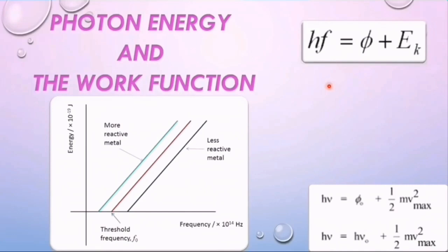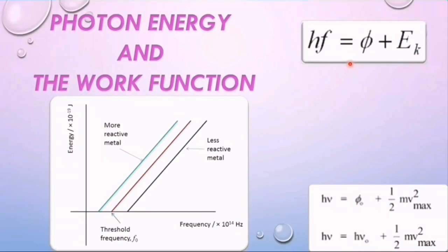The electron gains all of the energy of the incident photon and the photon no longer exists. The energy of the incident photons performs two jobs: first, it enables the electron to escape from the metal surface or energy well; and second, it increases the kinetic energy of the electrons. If energy of the incident photon is less than the threshold value, the surface electrons cannot overcome the electrostatic forces of attraction and cannot escape. This warms up the metal. Threshold frequencies vary from metal to metal, so each metal has a different value of work function phi.